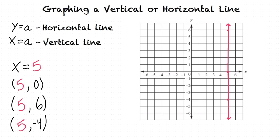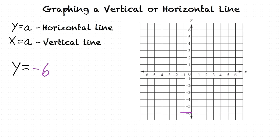So to review, what would the graph of the equation y equals negative 6 look like? That would be a horizontal line passing through the y axis at negative 6. Awesome.